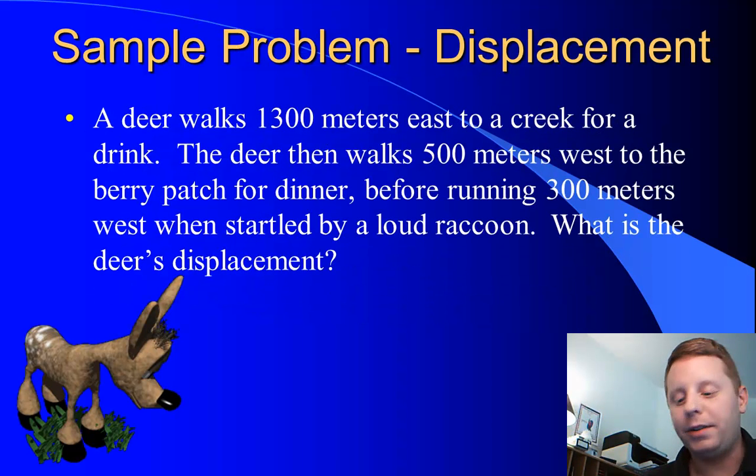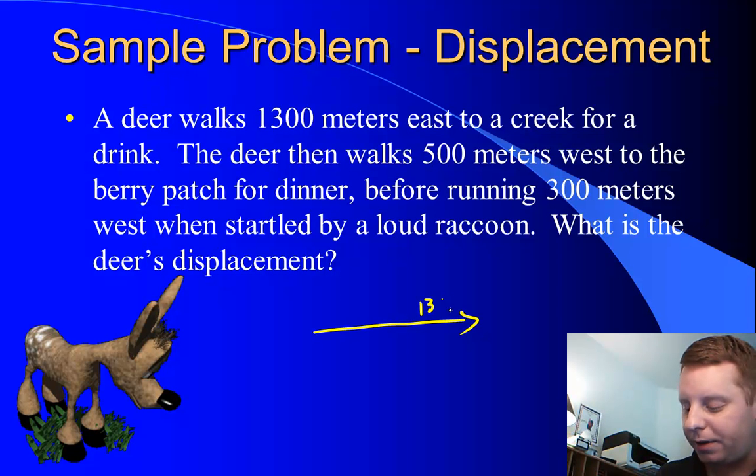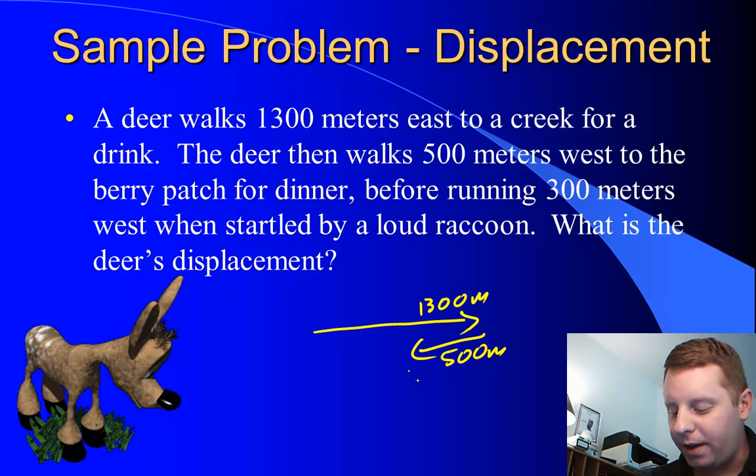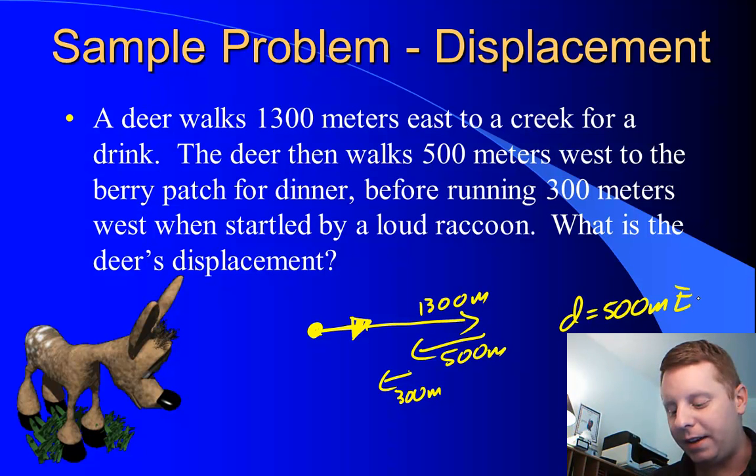A very similar problem, our deer walks 1300 meters east to a creek, 1300 meters, then it walks 500 meters west, then it ran 300 meters west. What was the deer's total displacement? Now remember, that's the straight line distance from where you start to where you stop, regardless of how you get there. So the deer started here, and when it was done after all of that running, it went 1300 meters east, 800 west, it went a total displacement of only 500 meters east, because the only points we worry about are the starting point and the ending point.